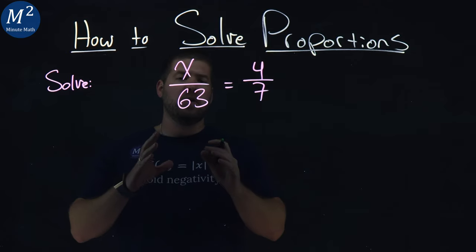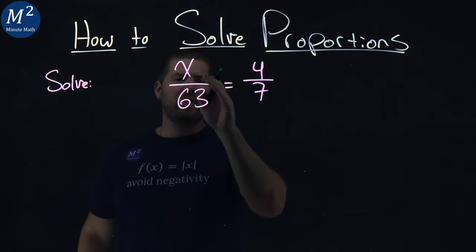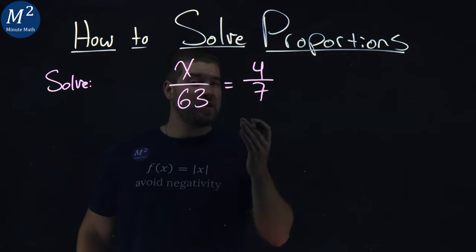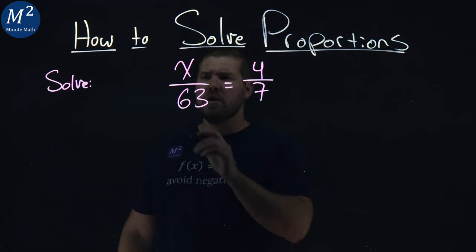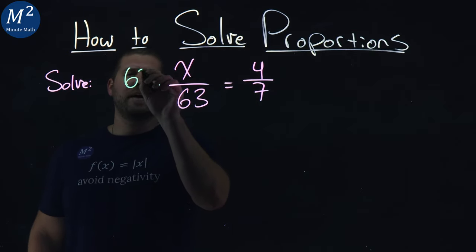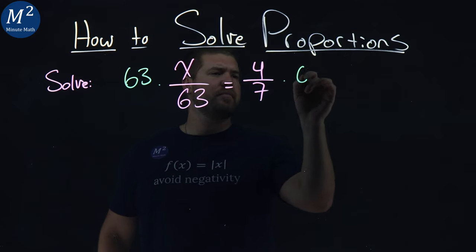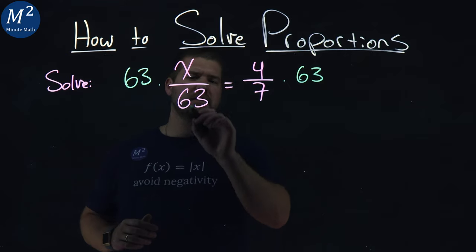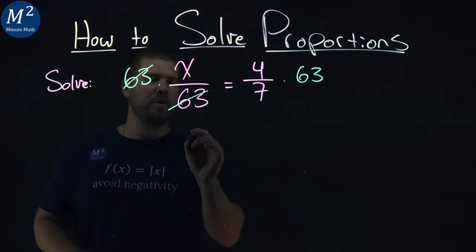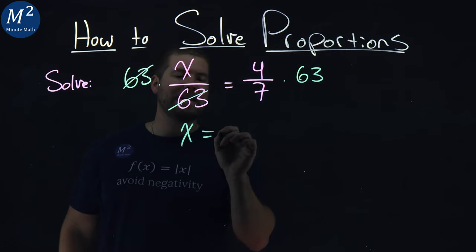Now, one of the things we know is we have division here, divided by 63. Opposite of division is multiplication. So if I multiply both sides by 63, the left-hand side cancels out that 63, and I'm left with x by itself.